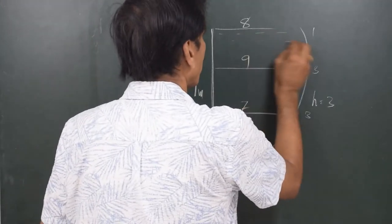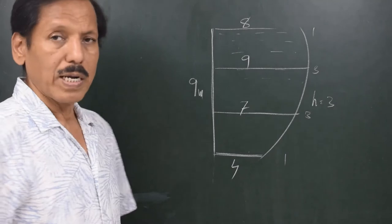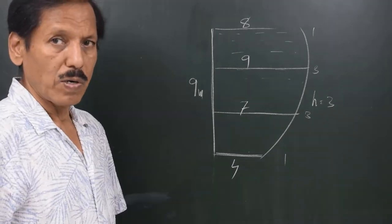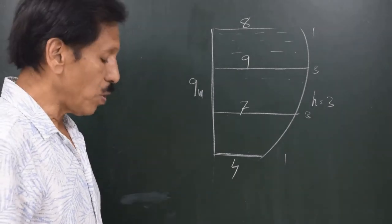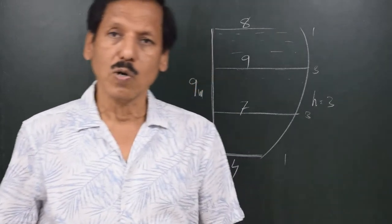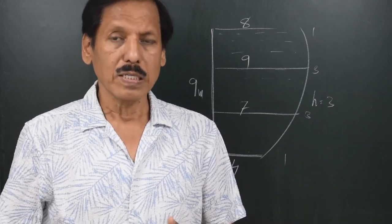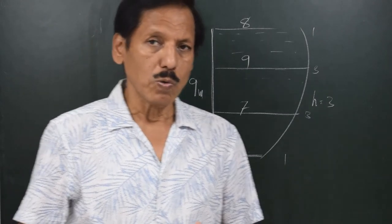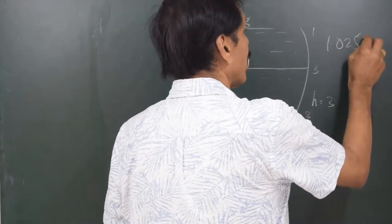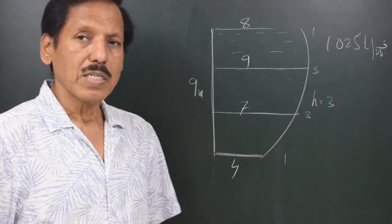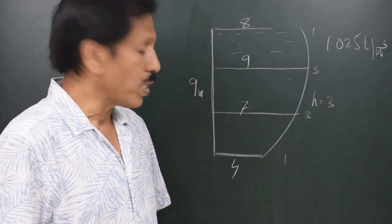The height of the bulkhead being nine meters, the uniform separation between ordinates is three meters, so h equals three. The bulkhead is the side of the tank, and the tank is filled up to this level. We need to find the area of the bulkhead, the thrust on the bulkhead, and where the centroid lies. Pressure at the geometric centroid multiplied by the wetted area gives the thrust. The density of water inside the tank is 1.025 tons per meter cube.